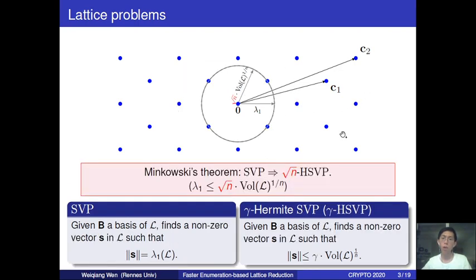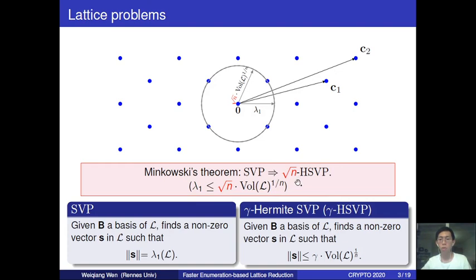By Minkowski's upper bound, we know that the first minimum can be upper bounded by the normalized volume of the lattice up to a factor square root n. So whenever you have a size-n SVP solver, correspondingly you have the same size approximate Hermit SVP solver with approximation factor square root n.